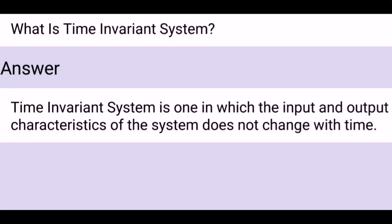What is a time-invariant system? A time-invariant system is one in which the input and output characteristics of the system do not change with time.